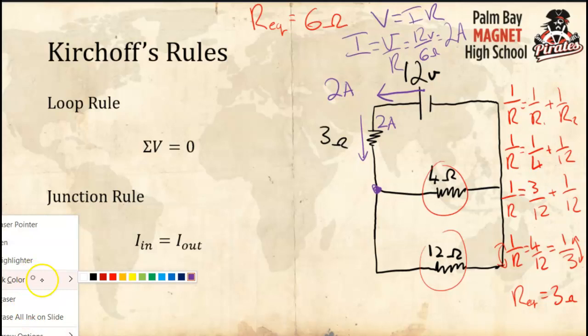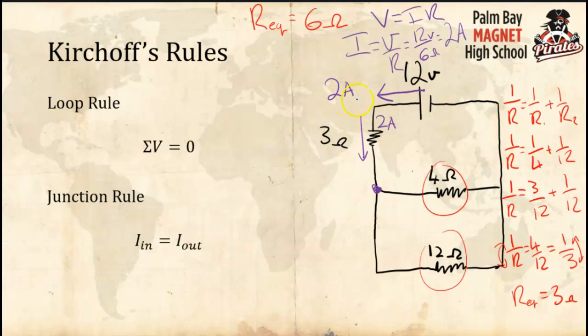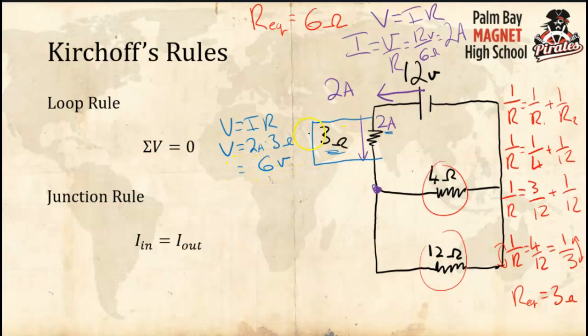So I have a 3-ohm resistor with a 2-amp current through it. Let's find the voltage drop. Voltage equals current times resistance: V = 2 amps × 3 ohms = 6 volts. There is a 6-volt drop across this series resistor.